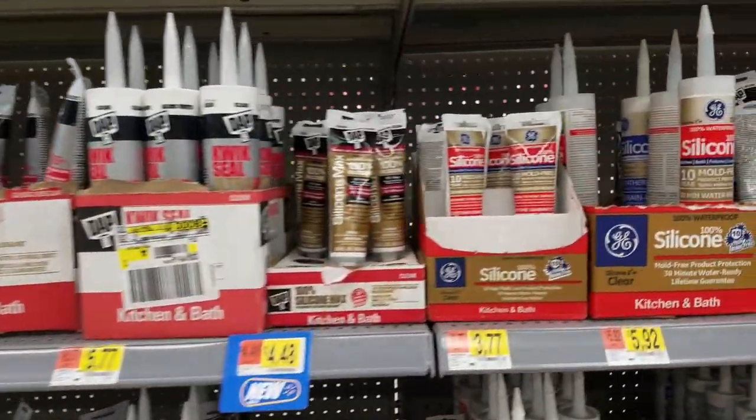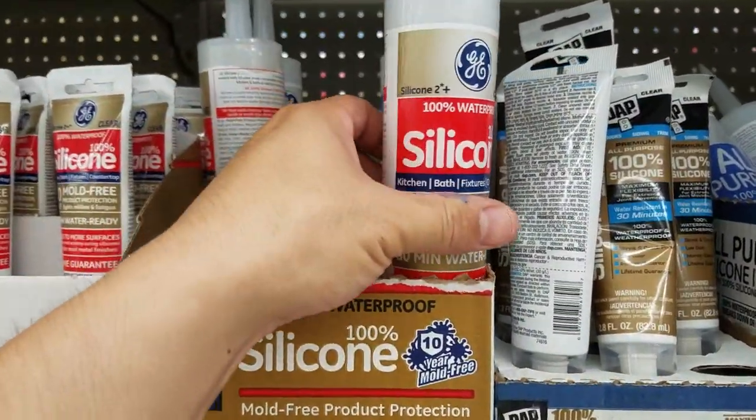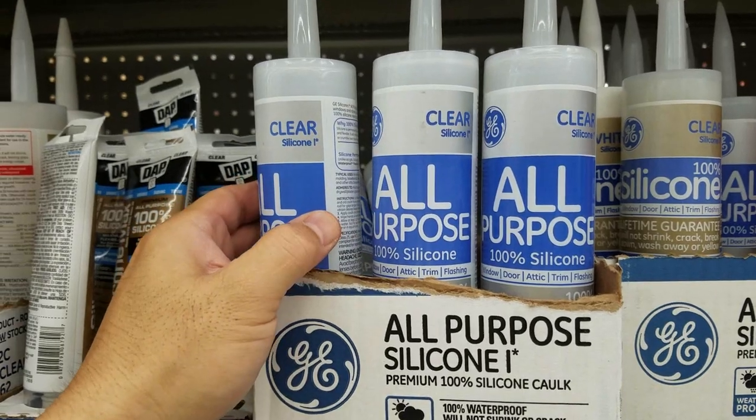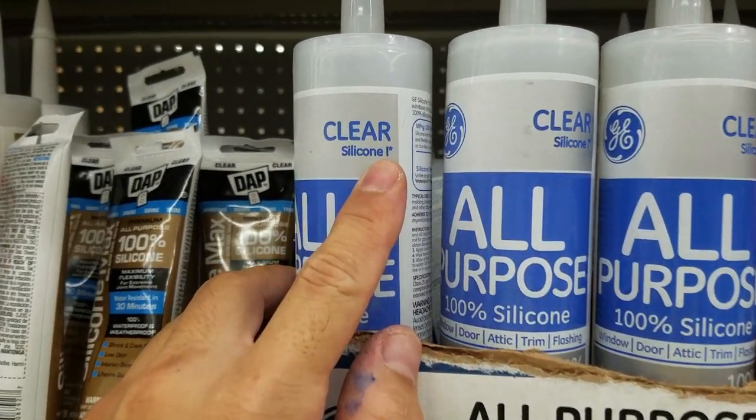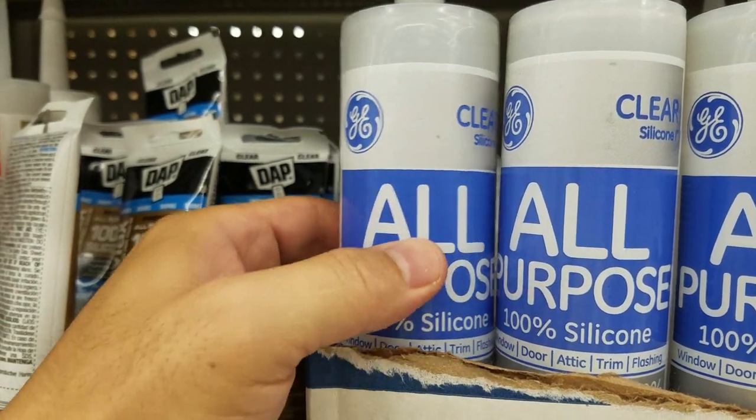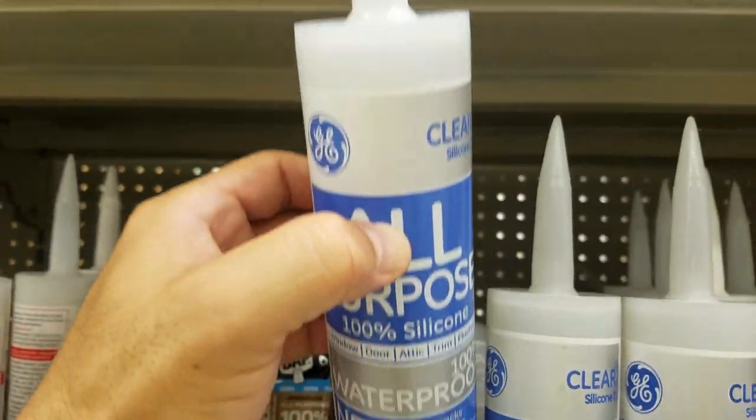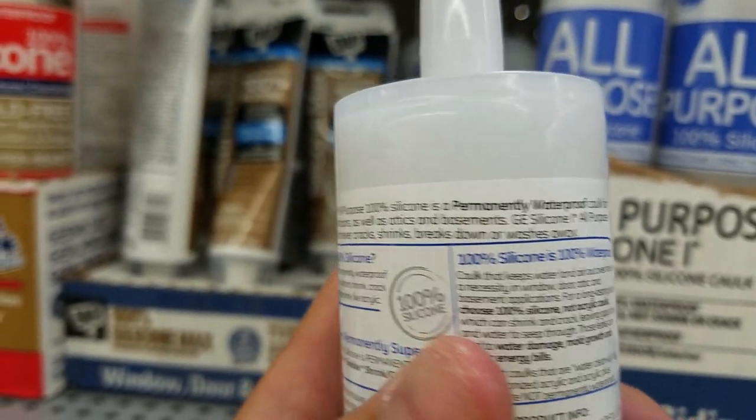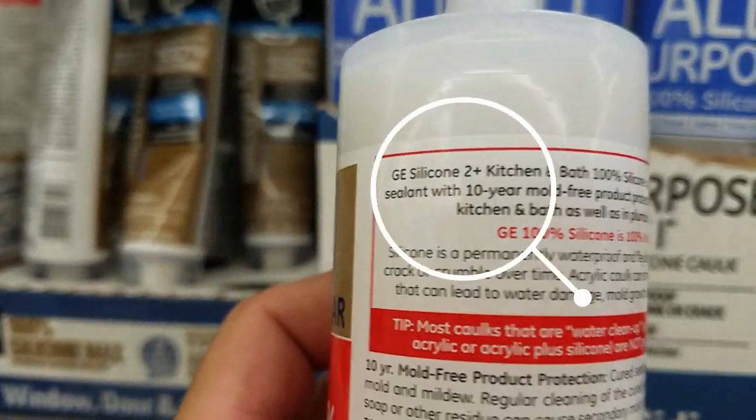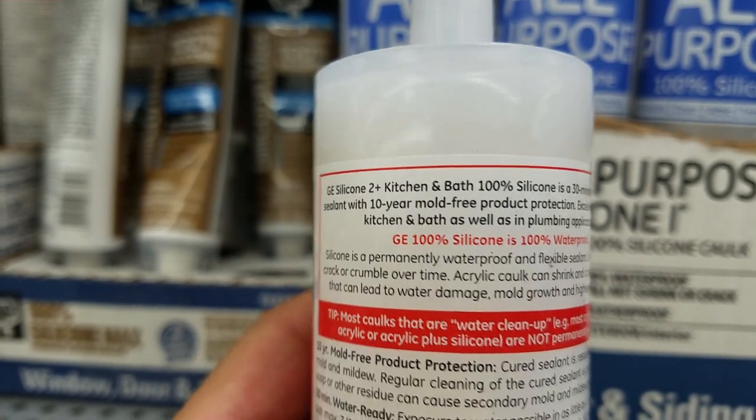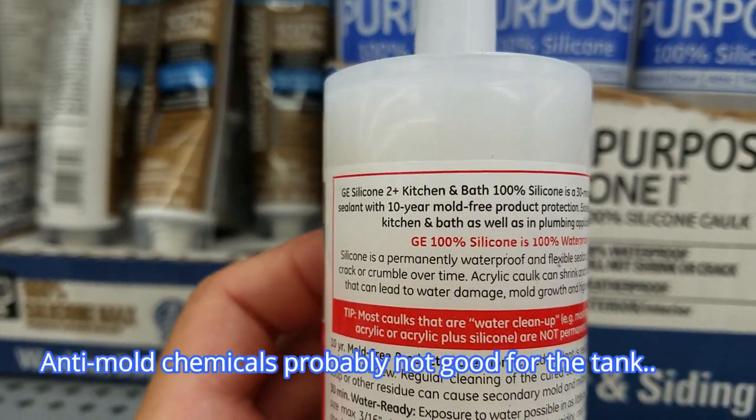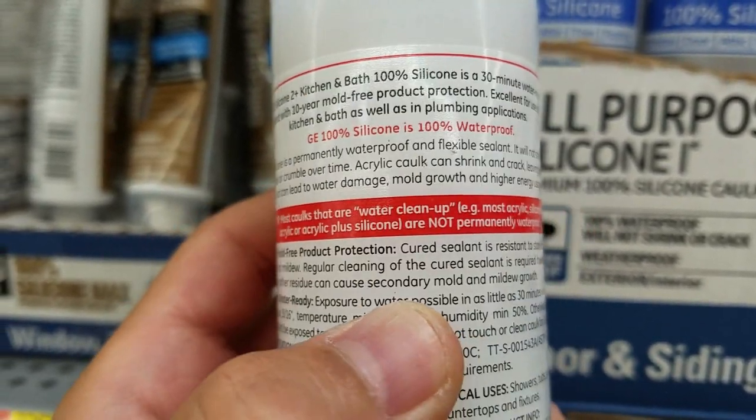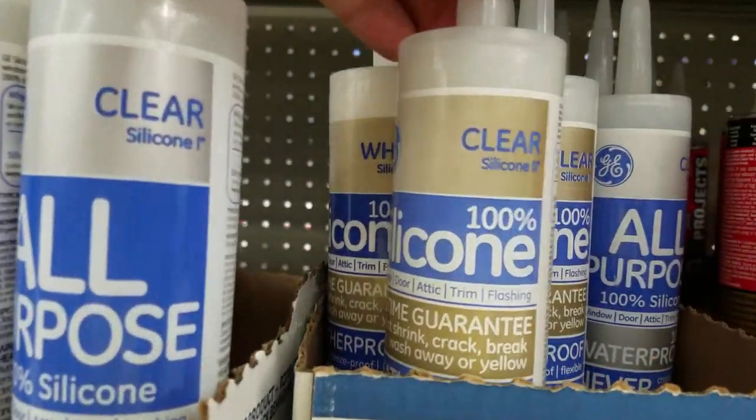So I had to run to the store to get some silicone because the silicone that I have was actually expired. When you're buying silicone make sure that you get GE silicone 1. There's also GE silicone 2 and a whole bunch of other types of silicone. They're all going to say 100% silicone somewhere on the label. But if you flip it over and you look at the top of the back, the GE silicone 1 mentions nothing about mold prevention. Whereas the silicone that you do not want to get, the GE silicone 2, talks about having 10 year mold protection or something like that. So make sure that you get the GE silicone 1 if you're going to use it for your aquarium.